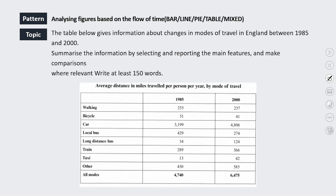First we've got a Task 1 essay — a table talking about travel changes and how people travel in England between 1985 and 2000, so obviously summarizing the information and making some comparisons. The first thing to do in Task 1 is take a minute or two, look at the graph carefully, and decide what trends you're going to talk about, because the key to a good Task 1 essay is having a good overview and being able to pick out the main trends. Looking at this table, there are two different ways we can compare it.